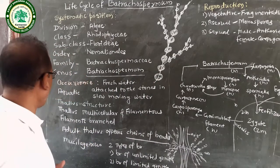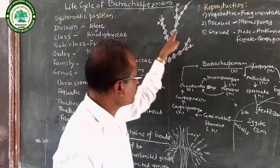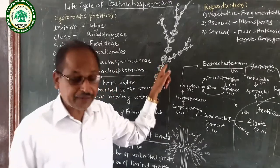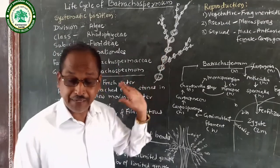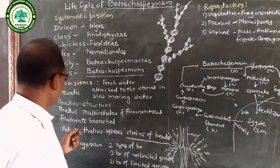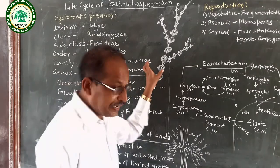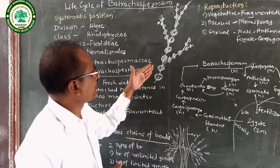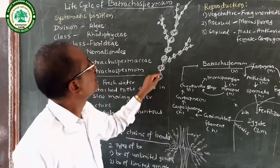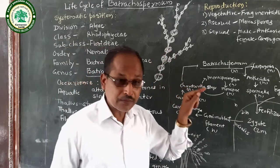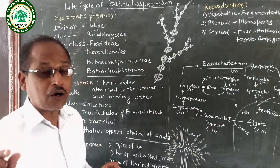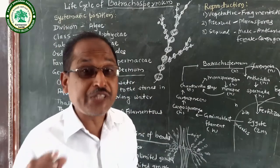The next point is Thallus Structure. The thallus structure of Batrachospermum is microscopic, measuring a few millimeters to centimeters. These branches are branched. When the thallus is adult and mature, it looks like a chain of beads — in Marathi it is called 'maleche mani' — meaning chains of beads. The thallus of Batrachospermum is mucilaginous.